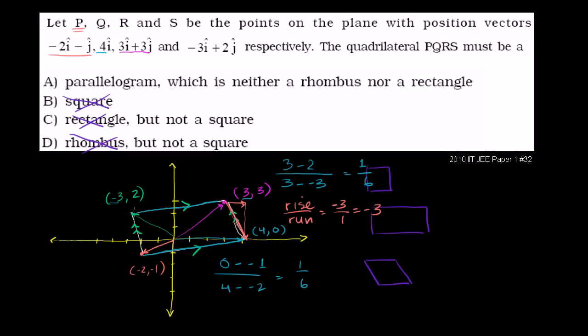And what about here? To go from this point to this point, we went to the right 1. So we ran 1, and we had to go down. We started at 2. We ended up at negative 1. We had to go down 3. So the slope here is also negative 3. So these lines are also parallel.